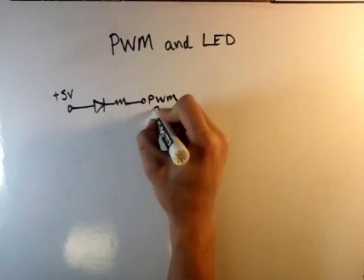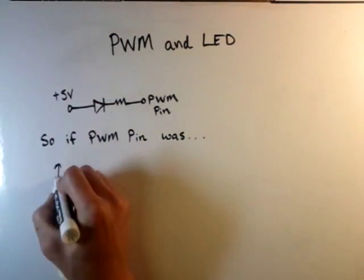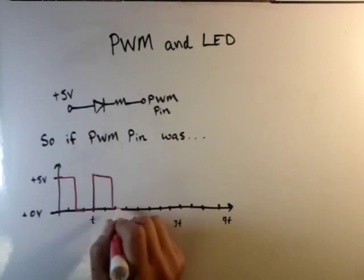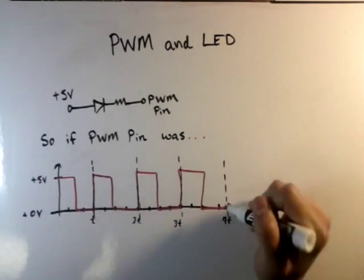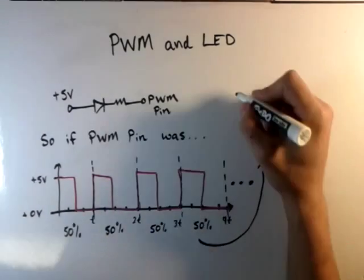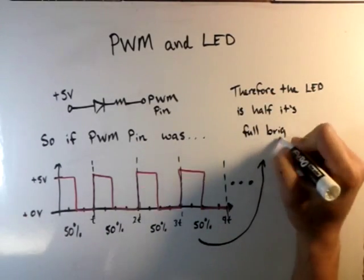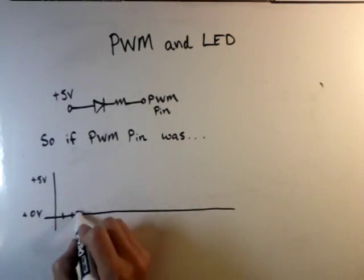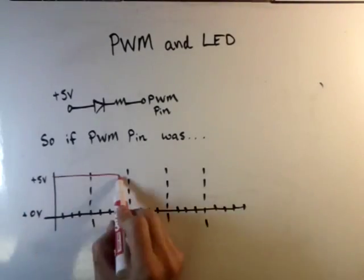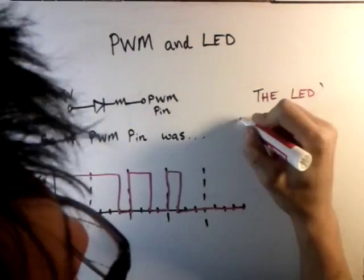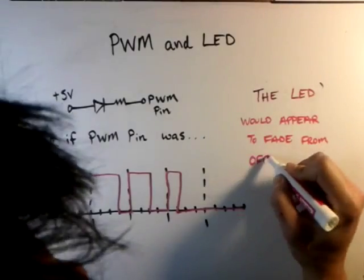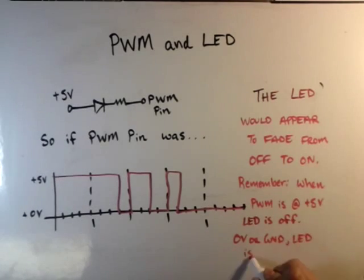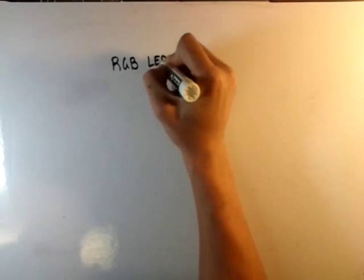Going back to the schematic seen earlier in this video, if the PWM is constantly being flipped on and off 50% of the time, then the LED is going to appear at 50% of its original brightness. Another possible PWM example would be if the plus five volts was decreasing in percentage with respect to time — this would make the LED appear to fade. Remember, when PWM equals five volts, the LED is off.